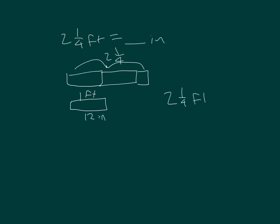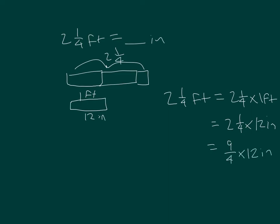Two and a fourth feet equals two and a fourth times one foot, equals two and one-fourth times twelve inches. As an improper fraction, two and one-fourth is nine-fourths. Nine-fourths times twelve inches: twelve cancels to become three, four becomes one, so that's nine times three, which is twenty-seven inches. Two and a fourth feet equals twenty-seven inches.